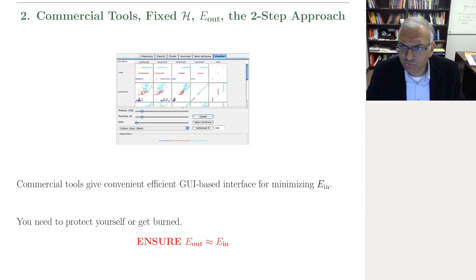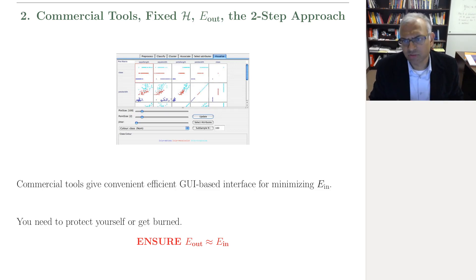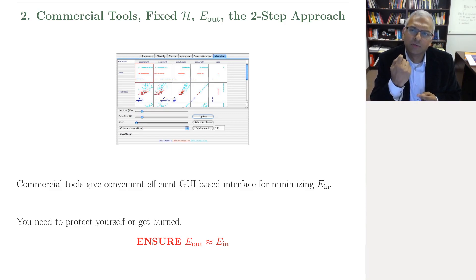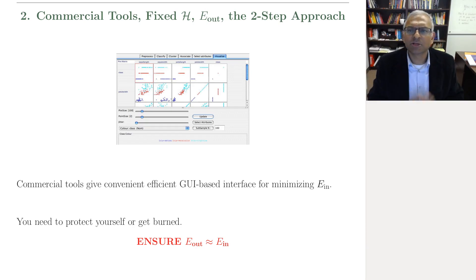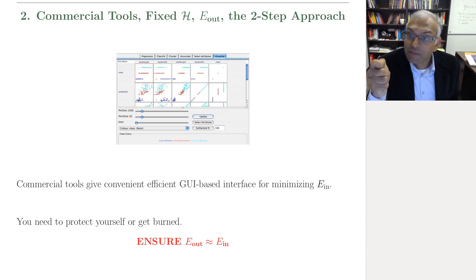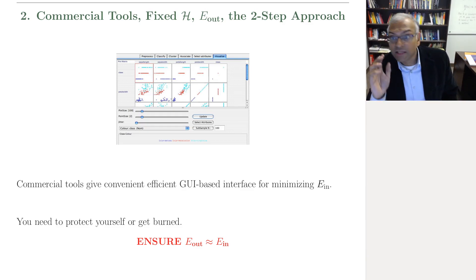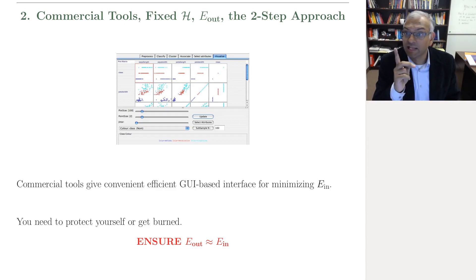Question 2: commercial tools — have they forgotten about fixing H, about E_out, the two-step approach? No. And it's important to understand there's a very good reason for this: when you come to a commercial tool with a dataset, they have no idea what you did with the dataset before. Did you try this? Did you try that? They have no idea what the union of hypotheses you might have tried. So they are not really gearing themselves towards giving you a handle on E_out, which is what learning is.